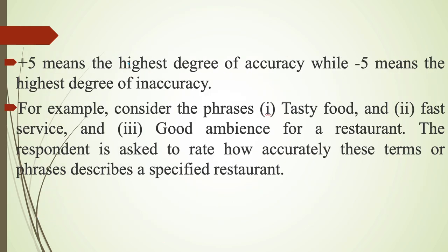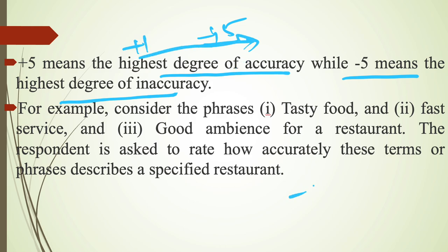Plus 5 means the highest degree of accuracy while minus 5 means the highest degree of inaccuracy. Towards plus when we are going up to plus 5 from plus 1, accuracy is increased. And when we are going from minus 1 to minus 5, inaccuracy is increased or accuracy is decreased.